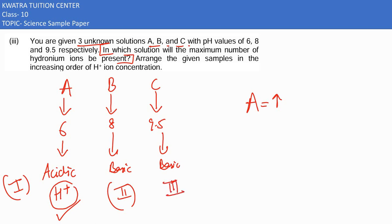The least acidic would be C, which is the most basic with the least H+ ion concentration. So we can understand the increasing order would be C is less than B, and B is less than A.